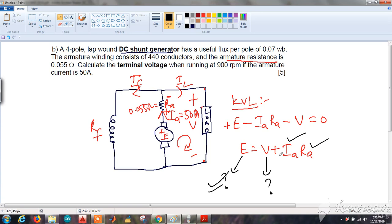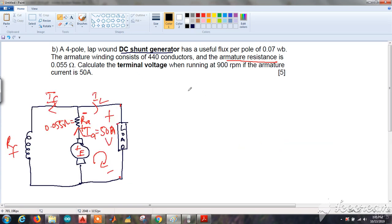We know that in a DC machine, E is proportional to phi omega. If I remove this proportionality, E equals K phi omega, where omega is the angular speed of the rotor, omega r.